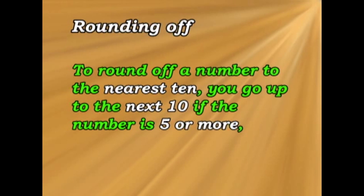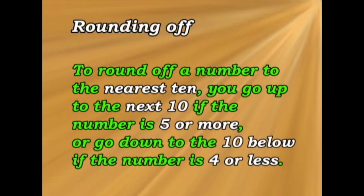To round off a number to the nearest ten, you go up to the next ten if the number is five or more, and you go down to the ten below if the number is four or less. For example: